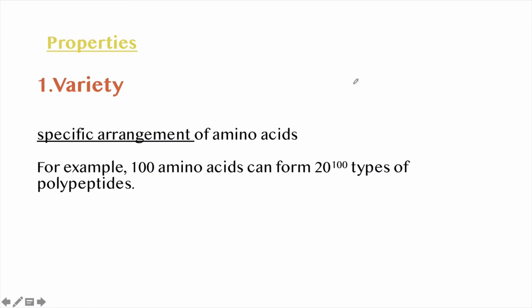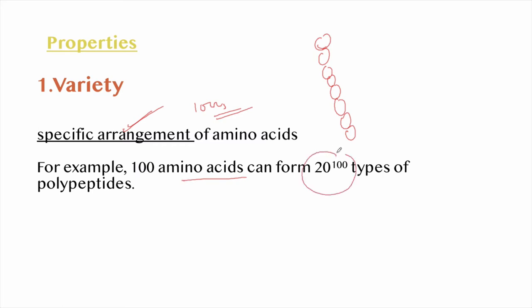Now let's look at the properties of proteins. First is variety. There are thousands of proteins present in each organism. This large variety is due to the specific arrangement of amino acids in their chains. For example, 100 amino acids can form 20 raised to the power 100 types of polypeptides, since there are 20 different amino acids.